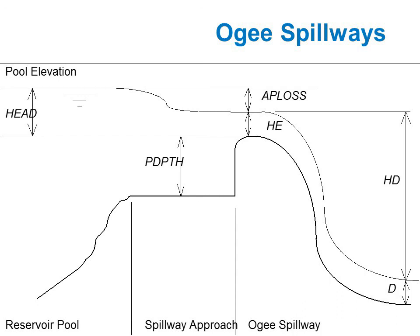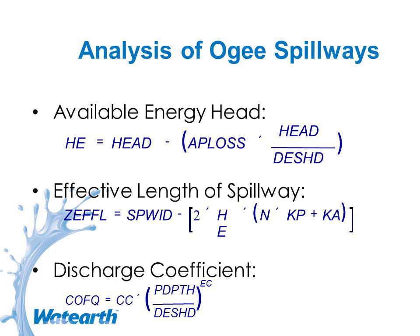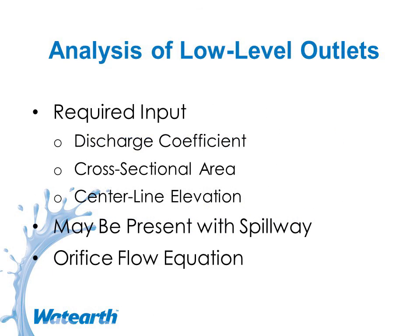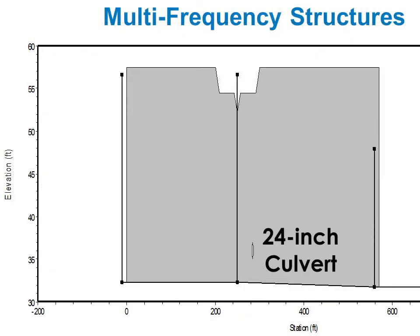An ogee spillway is more of a sharper weir — again, you need the same variables to enter into the model. Low-level outlets in HEC-HMS can be like a culvert — you choose shapes and other information — or an orifice opening. For a multi-frequency structure, if these are culverts they would go in as culverts, and the trapezoidal weir would go in as a spillway. HEC-HMS doesn't really have the capability to customize like some of the other detention routing models.